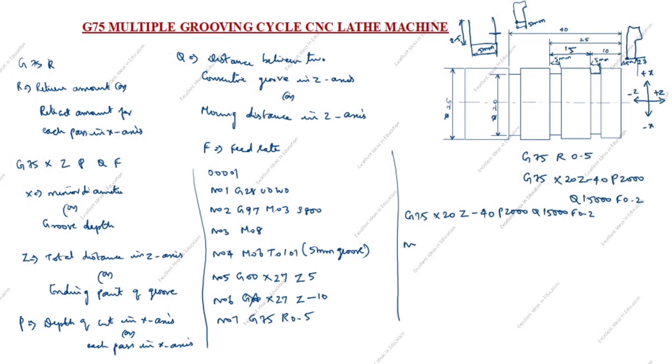Next is N09, this is N08. N09 is G00 X27 Z5. This is rapid move X27 Z5, now tool is in this position.